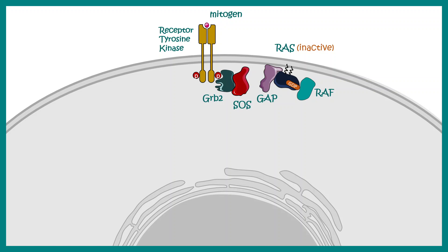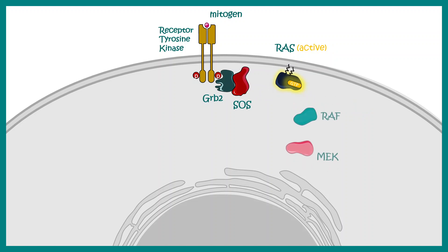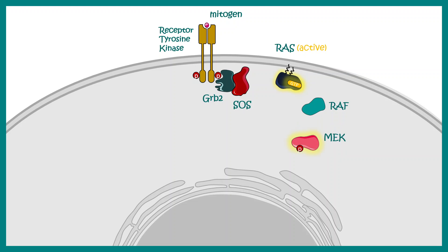When RAS is not bound to GTP, RAF is no longer interacting with RAS and the pathway would eventually be shut down. When RAS is active, RAF is also active and it interacts with another downstream kinase known as MEK, phosphorylating and thus activating MEK.